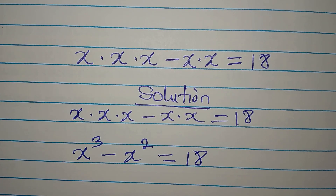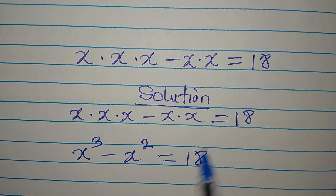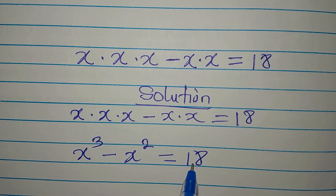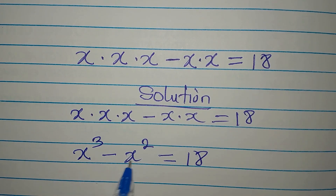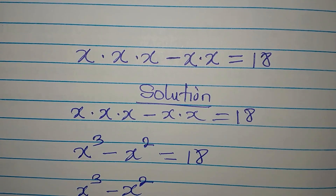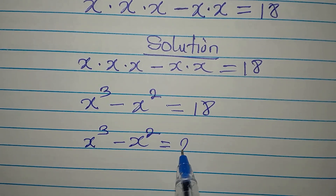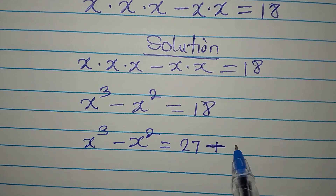Now I want to express the left-hand side by rewriting 18 in a matching form. Looking at x to the power of 3, I want to work with 27, because 27 minus 9 gives 18. So I need 9 and 27 in these two places, meaning I can write x to the power of 3 minus x to the power of 2 on the left, and 27 minus 9 on the right.